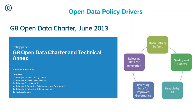The second principle is to try and improve the quality and the quantity of data that you publish. It's accepted that it's not possible to publish all data as open data on day one. The third is looking at the data to be usable by all — it has to come in a number of different formats so that different people can use it, from the normal user wanting visualisations to the developer community wanting to reuse the raw data.